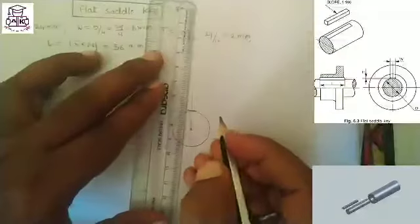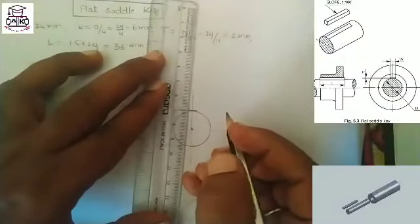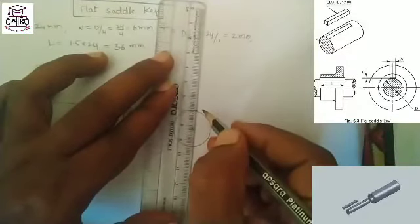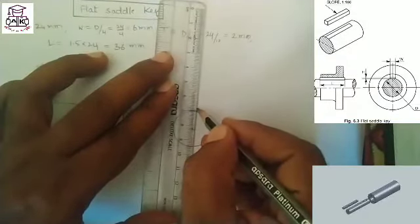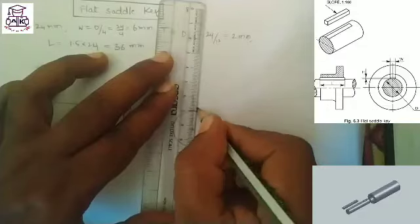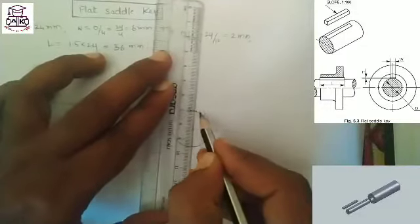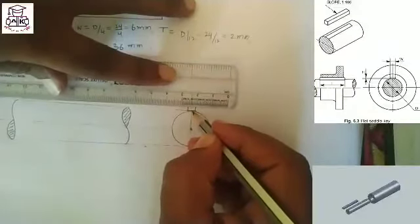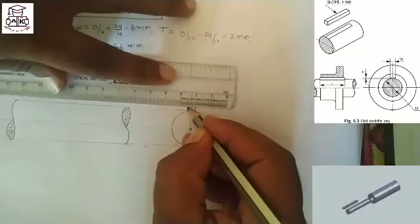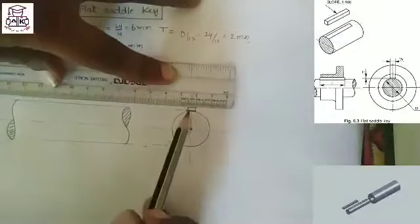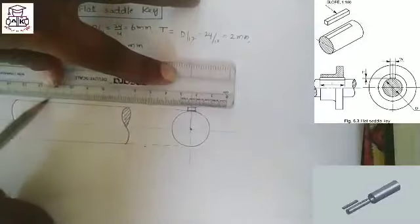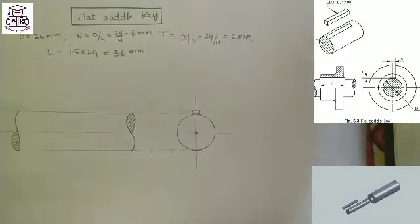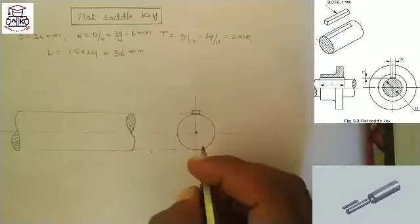Draw the horizontal line. Because of flat saddle key, keep 2 mm height and draw the key. Extend, that means project that key portion.